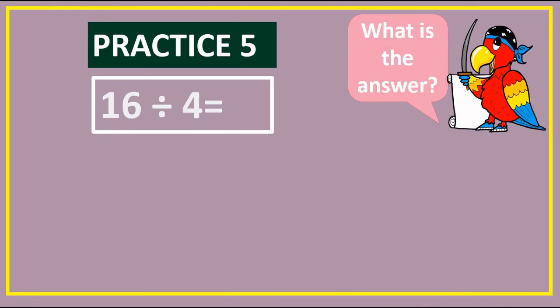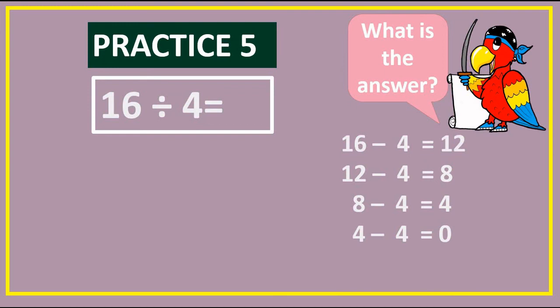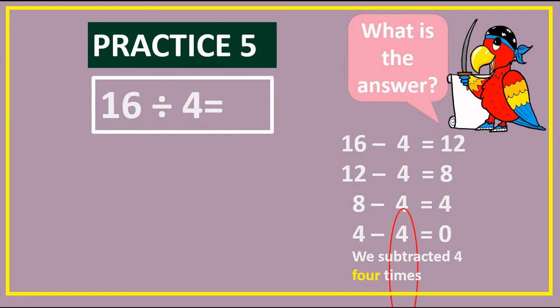16 divided by 4 equals blank. What number must we subtract over and over until we get to zero? If you said 4, you are right. Let's work this out. 16 take away 4 equals 12, 12 take away 4 equals 8, 8 take away 4 equals 4, 4 take away 4 equals 0. We subtracted 4 four times, so the answer is 4.